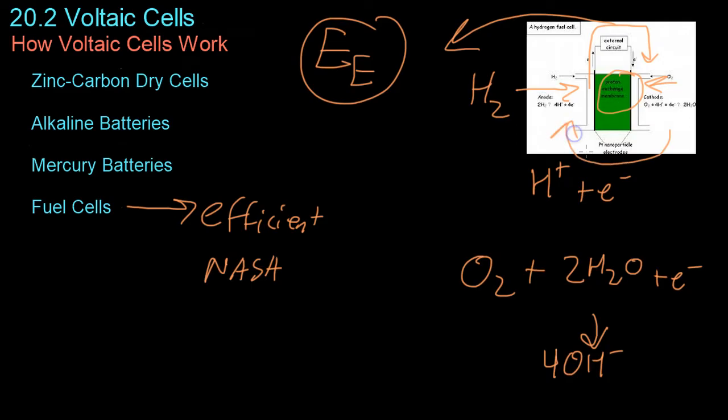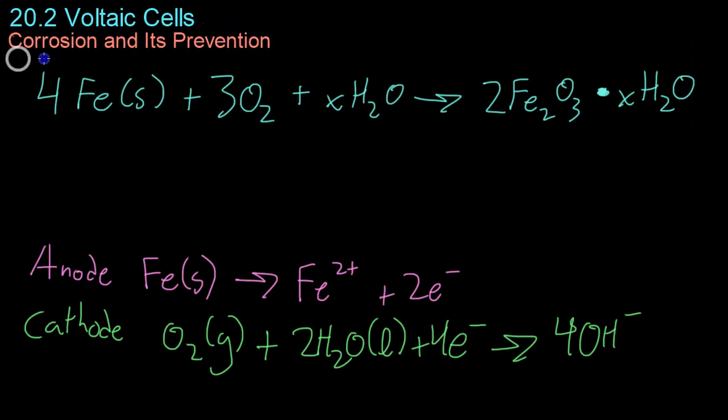Moving on now to corrosion, the most common type you're going to see every day is the rust of iron in the presence of oxygen. Basically, you take metallic iron like you'd have on your car and combine it with oxygen in the air and some amount of water.